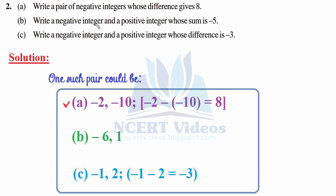Part b: Write a negative integer and a positive integer whose sum is minus 5. Take minus 6 and plus 1. When we add them, signs are different so we subtract, and the sign comes from the greater number: 6 minus 1 is 5, and the sign comes from the greater number which is minus, giving minus 5.